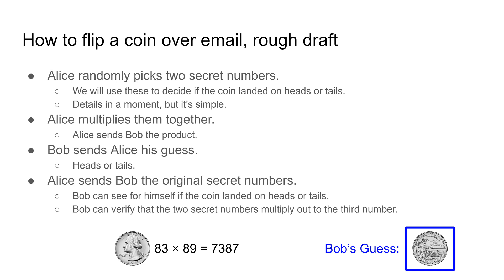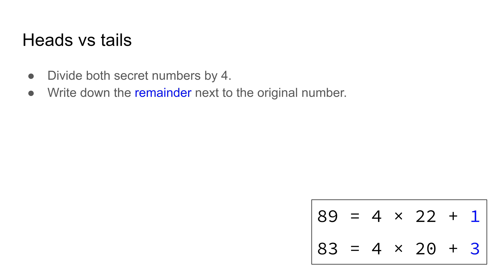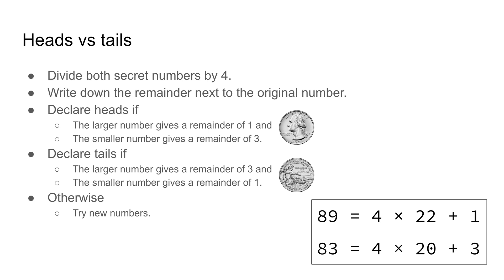Finally, Alice reveals her secret numbers to Bob. How do you translate the two secret numbers into a coin flip? It's easy. The hardest thing you need to do is divide by four and take the remainder. Then decide which of the three rules applies to your numbers. In this example, the virtual coin landed on heads.